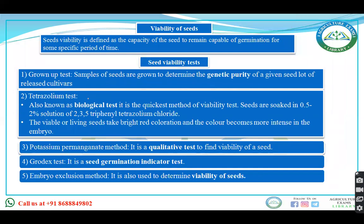Moving to seed viability: this is the capacity of a seed to remain capable of germination. Various tests exist to test viability. The grow-out test is done to find genetic purity. The tetrazolium test is also known as the biological test and is the fastest or quickest method to test viability. In this test, seeds are soaked in 0.5 to 2% solution of 2,3,5-triphenyl tetrazolium chloride. If the color changes to red and becomes intense, the seed is viable.